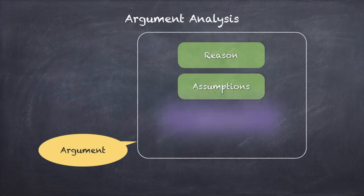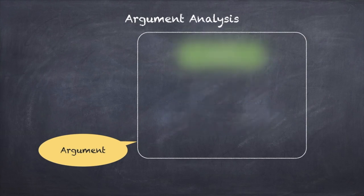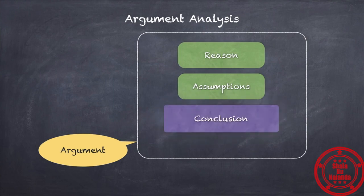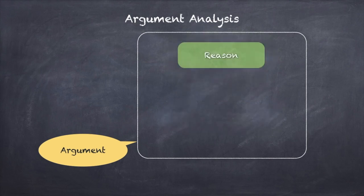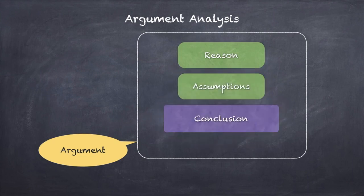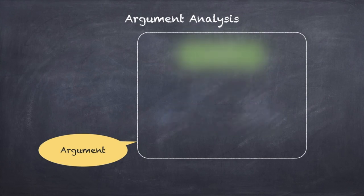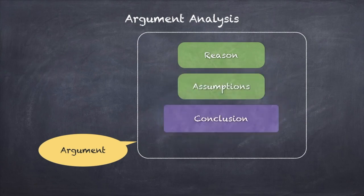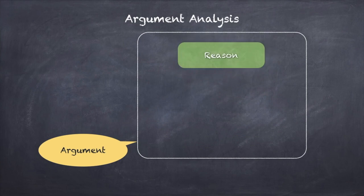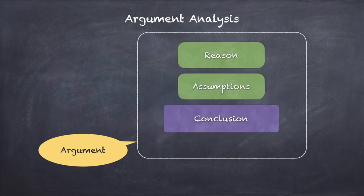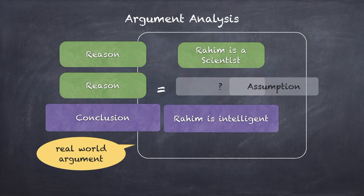So the basic idea: reason plus reason equals conclusion, and more specifically in the real world, reason plus assumption — an unstated reason — equals conclusion. This is the skill required to break down arguments and analyze them: spotting the assumption, finding the missing link, reading between the lines. Our real world arguments will be slightly longer, bigger, and in more real world language. Let's look at a few examples, then we'll move to the questions.